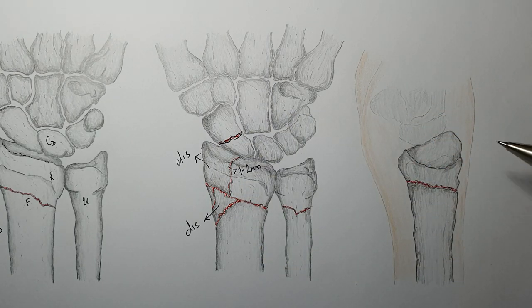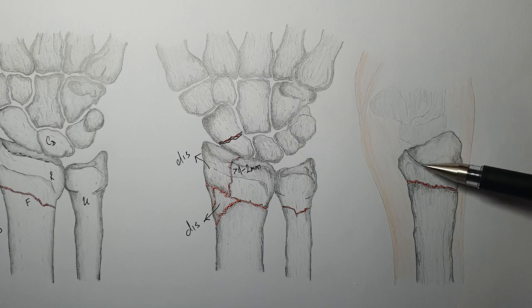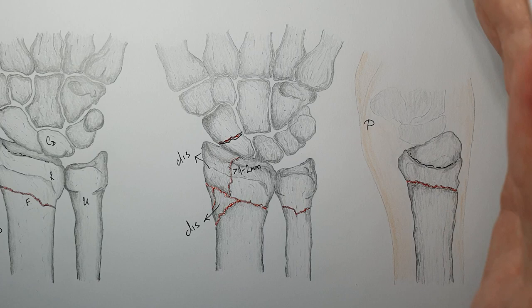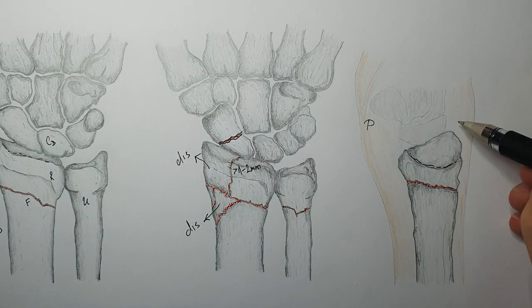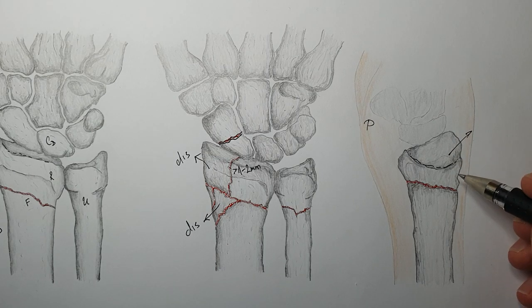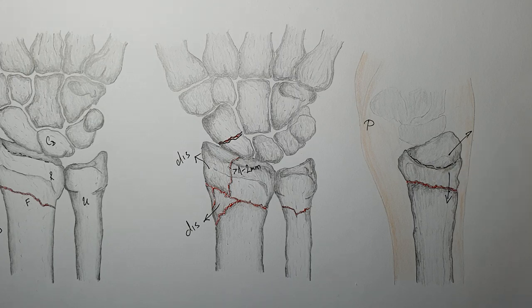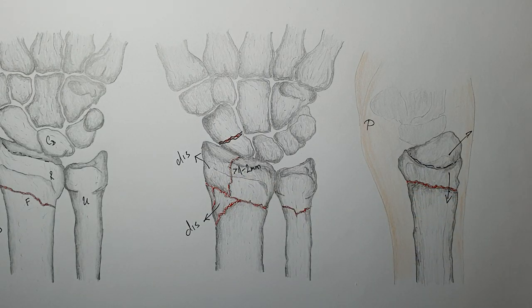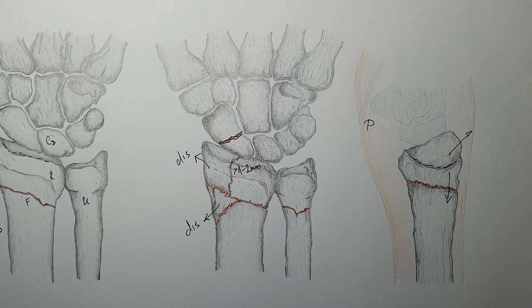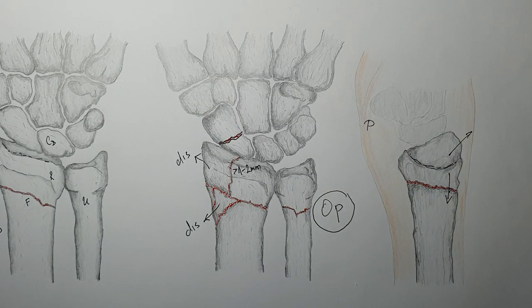On the lateral view, we see that the articular surface of the radius is not facing the palmar side of the hand — it is facing dorsally. If this cannot be repositioned to be stable, it needs to be operated. Because of the fracture, the radius has shortened and there is dislocation. In cases with significant dislocation, multifragmental and unstable fractures, other bone involvement, or intraarticular fractures displaced greater than one to two millimeters, operative management needs to be considered.